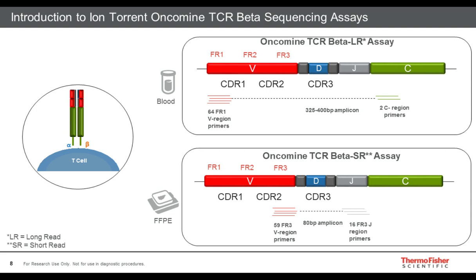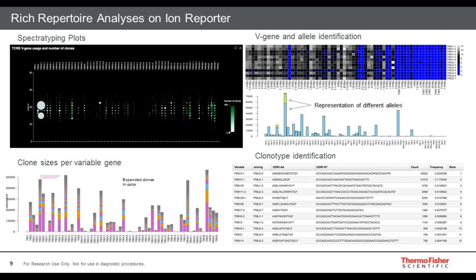Both of these assays can be analyzed in Ion Reporter, our analysis platform, which includes a number of analyses that allow one to quickly get a sense of immune repertoire features. This includes visualizations of the repertoire that allow one to quickly assess the extent of clonal expansion or diversity, as well as longitudinal tracking of clones over time. The data produced by this assay is freely available to customers — you have access to the raw data, and this analysis can be run locally on your Ion Reporter server or cloud.